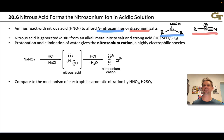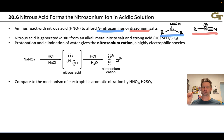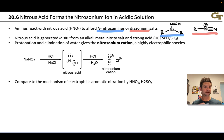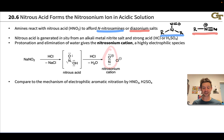Nitrous acid is not an acid you can store for long periods of time — it's susceptible to oxidation to nitric acid and other reactions. Most frequently, we generate nitrous acid in situ, in the reaction flask, right as it's needed, by combining an alkali metal nitrite salt like lithium nitrite or sodium nitrite with a strong acid such as hydrochloric acid or H2SO4. Hydrochloric acid is very common since we get a chloride counter ion for any positively charged intermediates. When nitrous acid is generated in the presence of more hydrochloric acid, elimination of water can occur to produce the nitrosonium cation and Cl-.